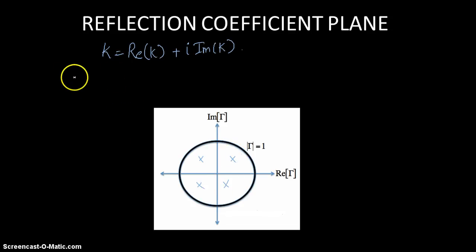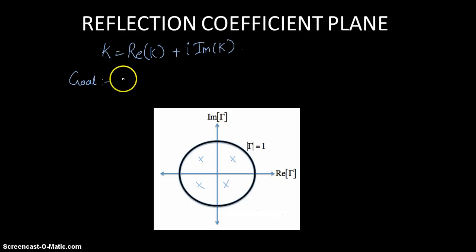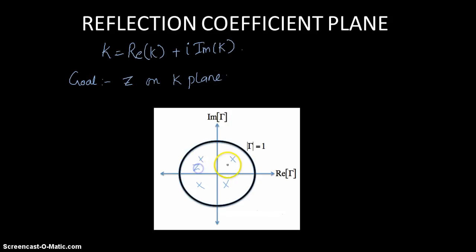We established that the goal of a Smith Chart is to try and visualize the impedance value. So basically we are trying to draw the value of Z on the k plane, and using any space inside that space I should be able to plot my required Z value.